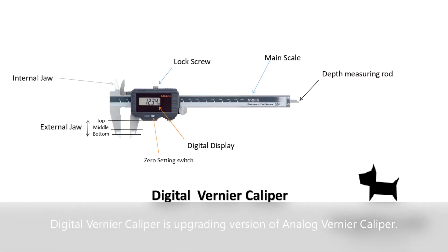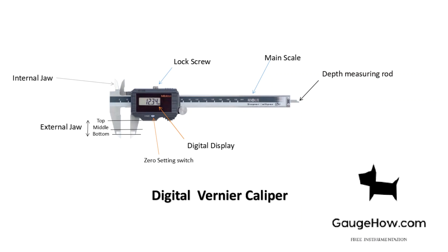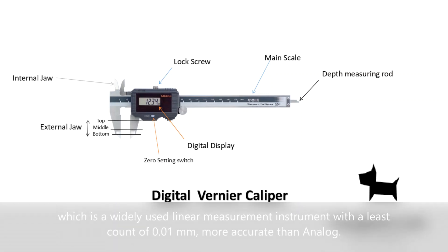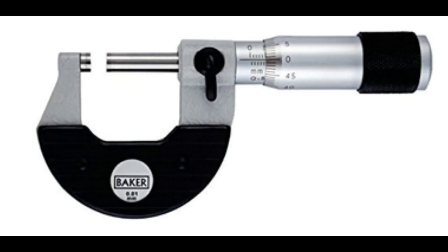Next is the Digital Vernier Caliper, which is the upgraded version of the Analog Vernier Caliper and is a widely used linear measurement instrument with a least count of 0.01 mm — more accurate than the Analog.